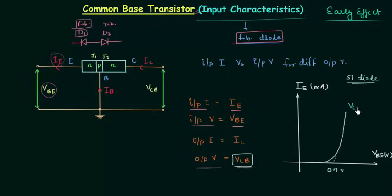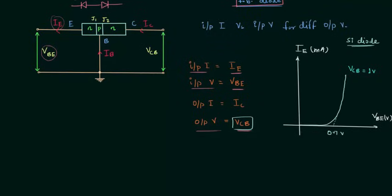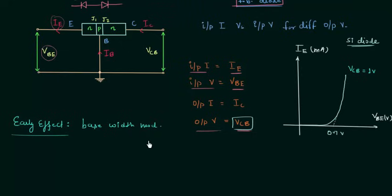Let's say this plot is for VCB equal to 1V. Now we have to study the effect on characteristics when we increase or decrease VCB. To understand this we first need to study the Early Effect, which is a very important concept in analog electronics. This effect is also known as base width modulation, named after James M. Early who discovered it.